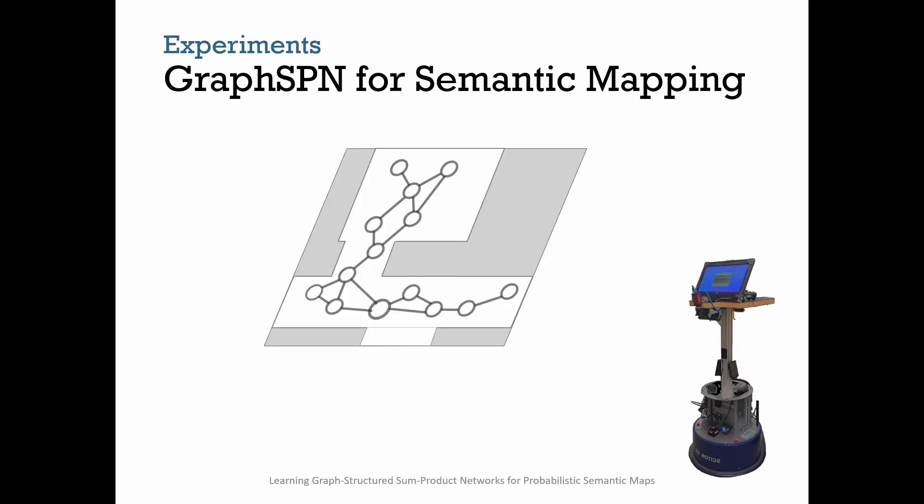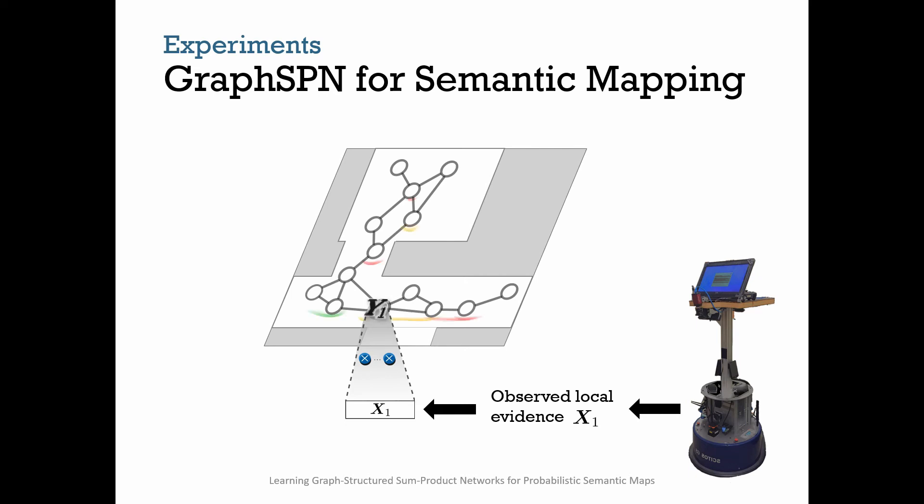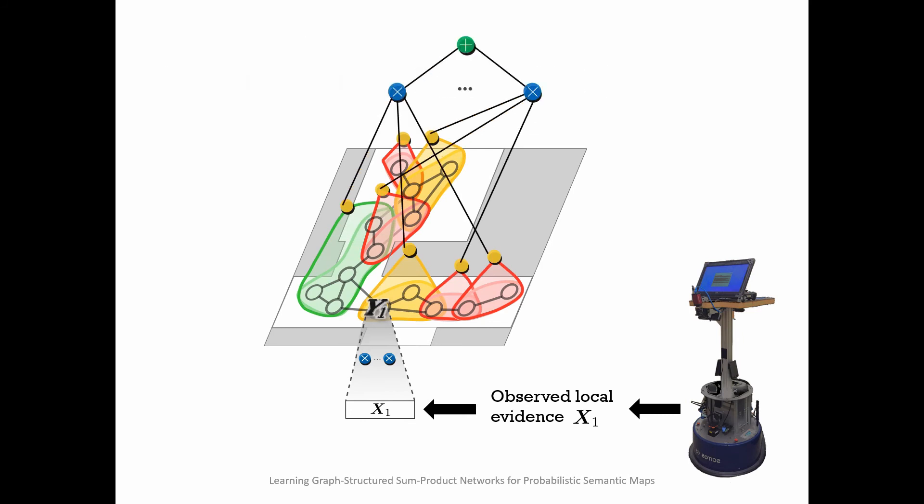In our experiments, we begin with a problem structured according to a topological map. For each node, a latent variable represents semantic place attribute. Additionally, it might have local evidence based on robots' perception. We instantiate a learned Graph SPN and infer the final values of semantic attributes by leveraging the spatial relations captured by the topology of the environment.